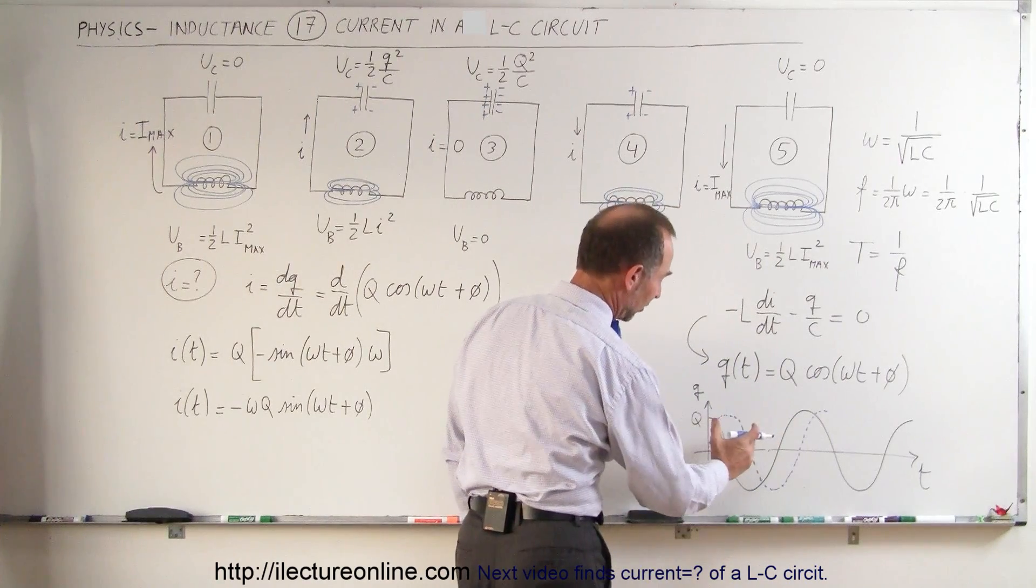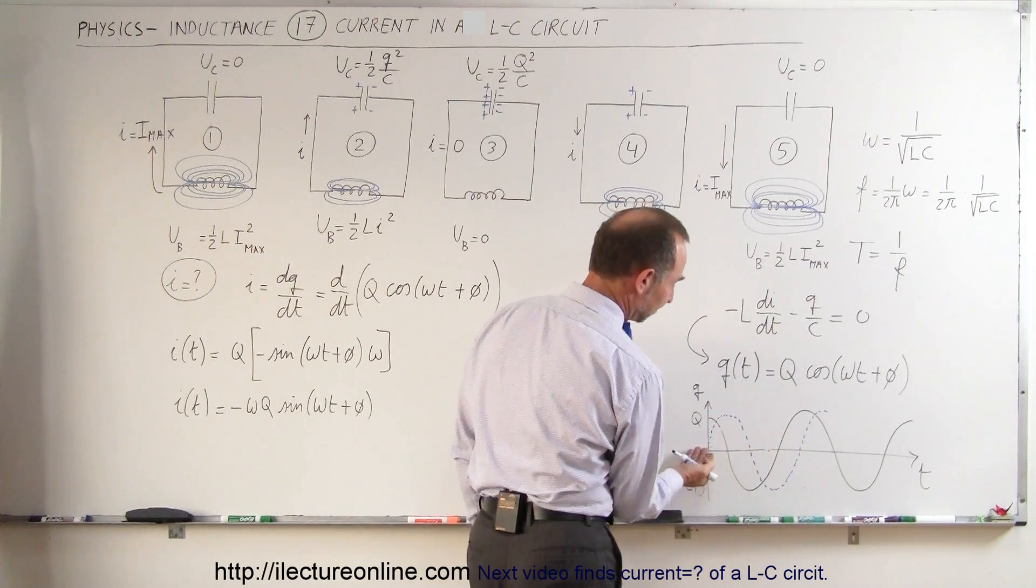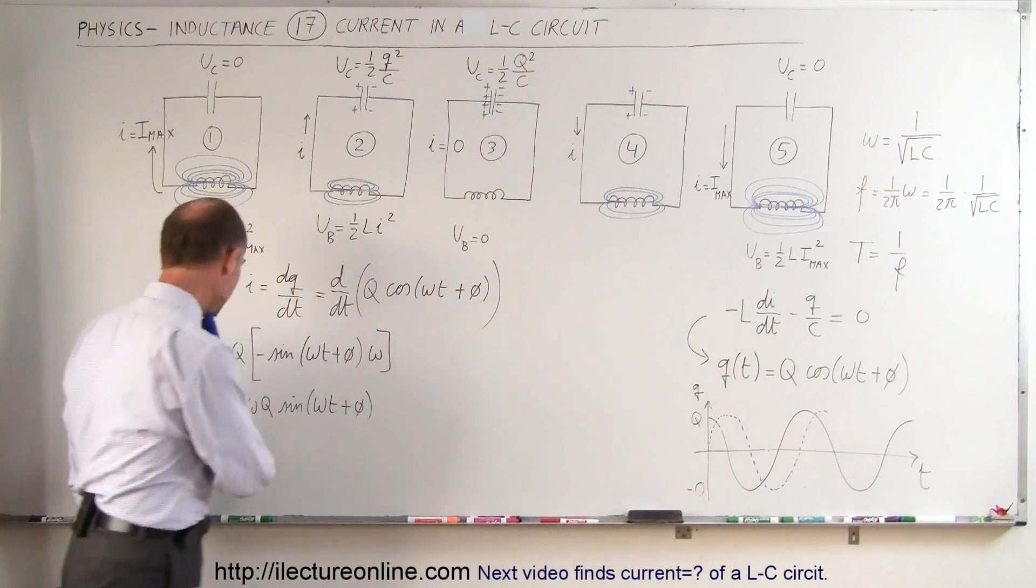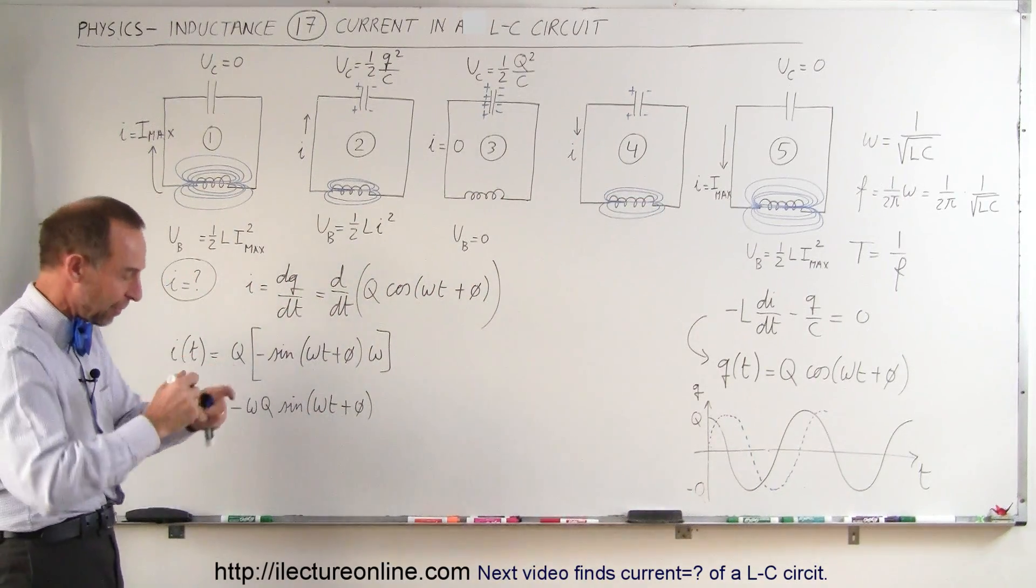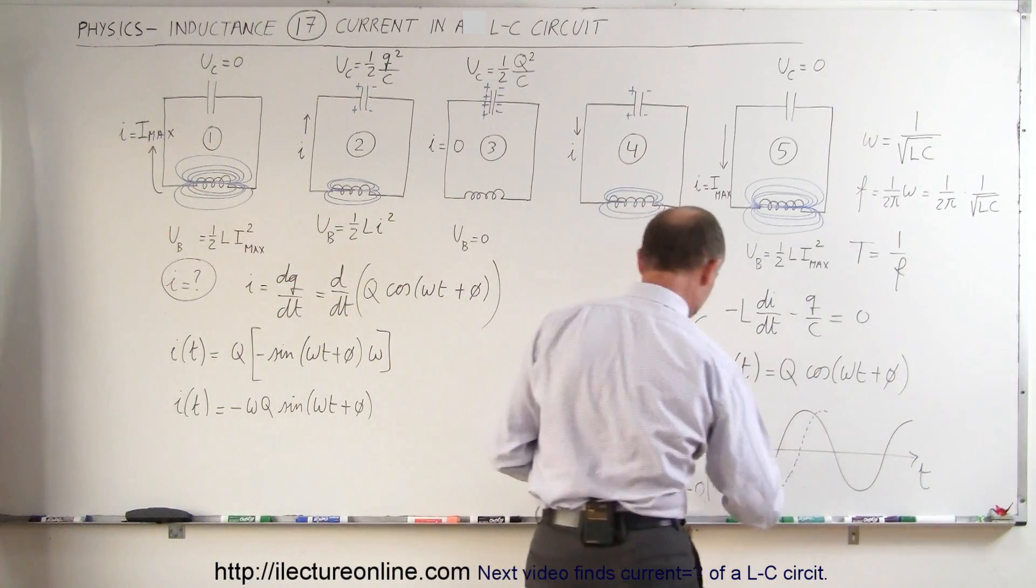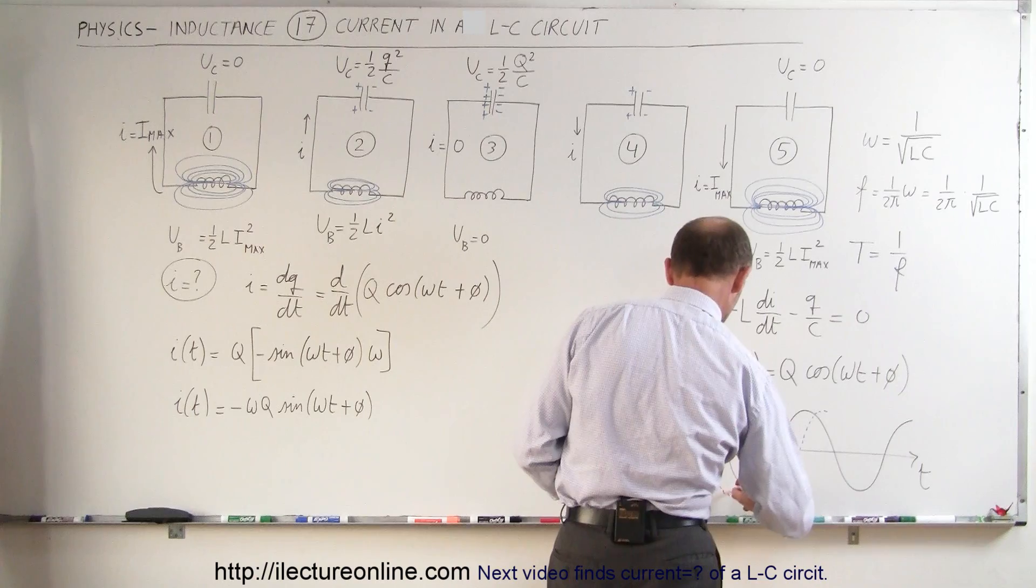So basically we're shifted about a quarter of a cycle to the right. And of course since I have a negative sign here, negative sign, I need to flip that around. I use a different color. When I flip that around my function would look like this.